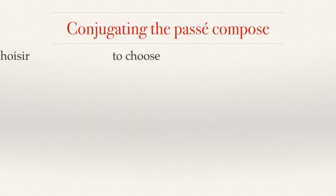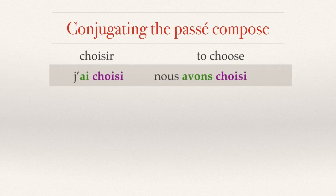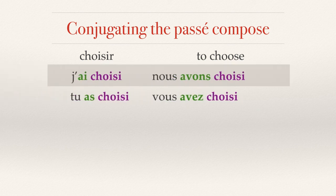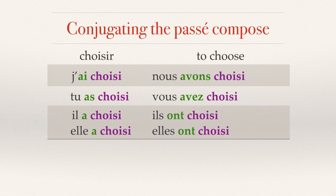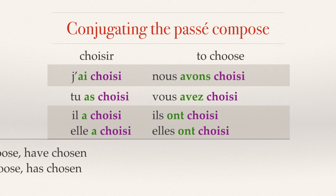For IR verbs, we drop the R to get our past participle: choisi. Then we conjugate the verb avoir: j'ai choisi, tu as choisi, il a choisi, elle a choisi, nous avons choisi, vous avez choisi, ils ont choisi, elles ont choisi. Choisi did not change throughout the conjugation — the form of avoir did.